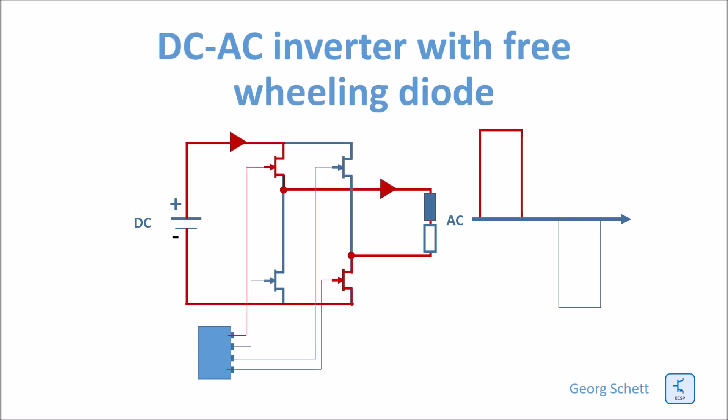A controller triggers the switches and makes sure that they are switched on and off in the right sequence. In order to get a somewhat smoother output signal we insert a dead time between the voltage positive and negative half cycle. During this dead time none of the switches is switched on.